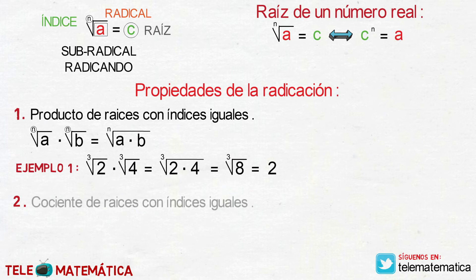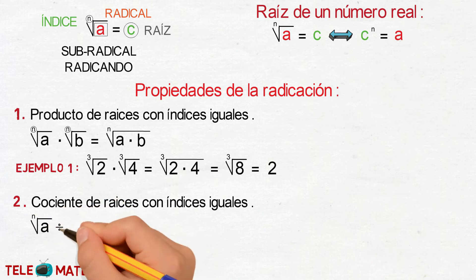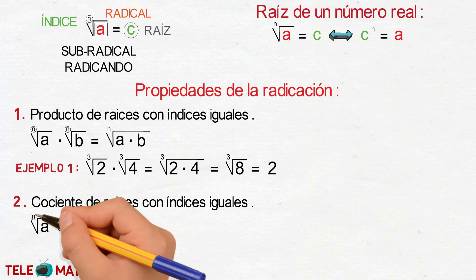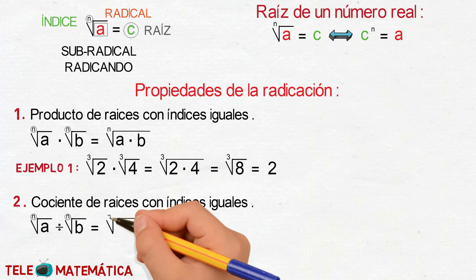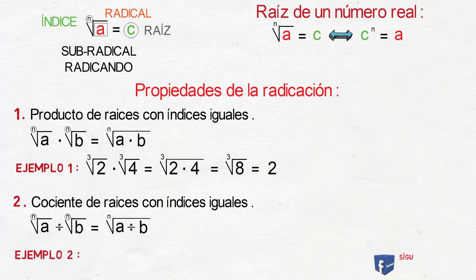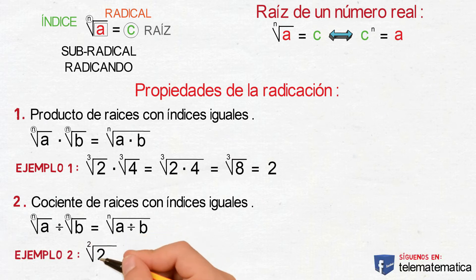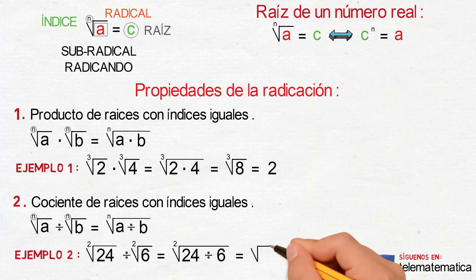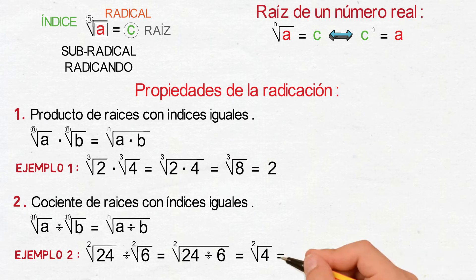Segunda propiedad: cociente de raíces con índices iguales. Se define como raíz enésima de A dividida por la raíz enésima de B, va a ser igual, similar a la propiedad anterior, a conservar el índice N y dividir los subradicales. Veamos un ejemplo: raíz cuadrada de 24 dividida para la raíz cuadrada de 6. Aplicando la propiedad, nos quedaría raíz cuadrada de 24 dividido para 6. Resolviendo la división, esto nos quedaría raíz cuadrada de 4 y, aplicando la raíz de un número real, esto sería igual a 2.